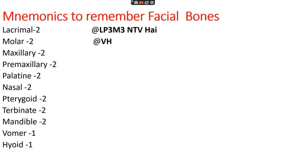In the mnemonic LPM NTVA: L is for lacrimal; P-cube stands for premaxillary, palatine, and pterygoid; M-cube stands for maxillary, mandible, and molar; N is for nasal; T is for turbinate; V is for vomer; and H is for hyoid. For single bones, remember VH — vomer and hyoid are the single bones. All other facial bones are paired.